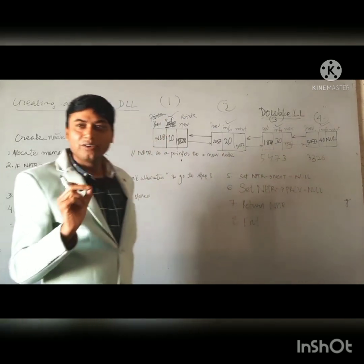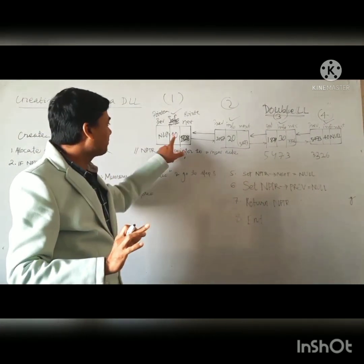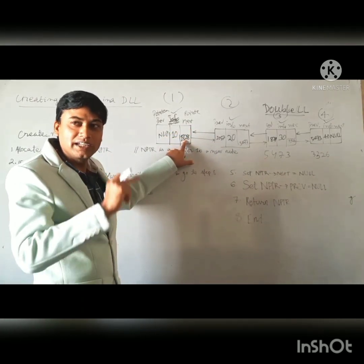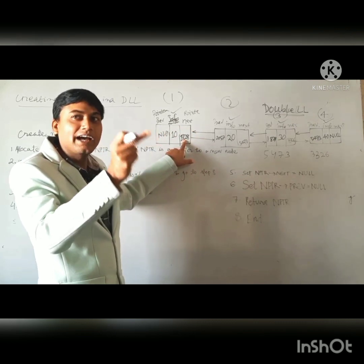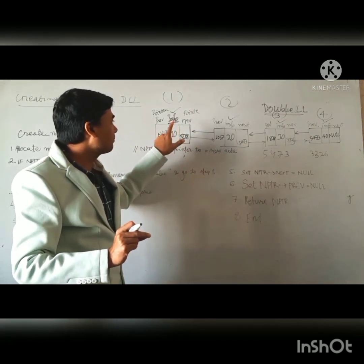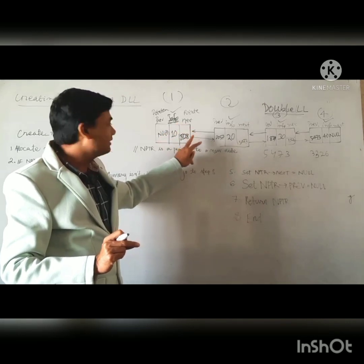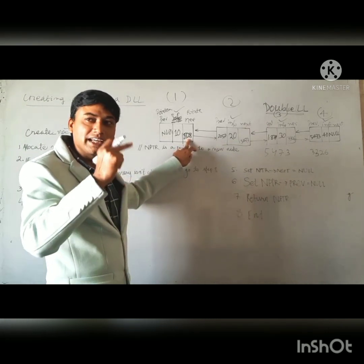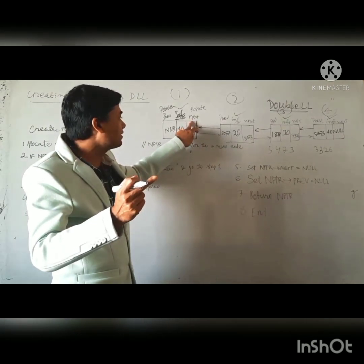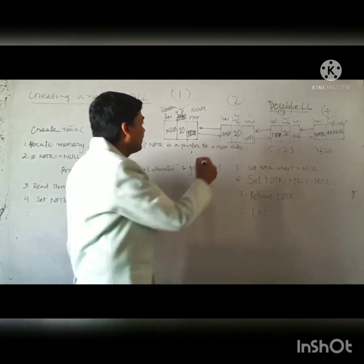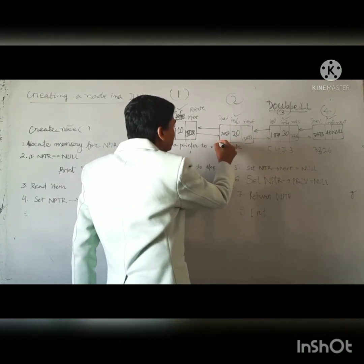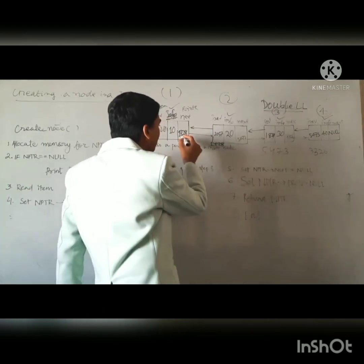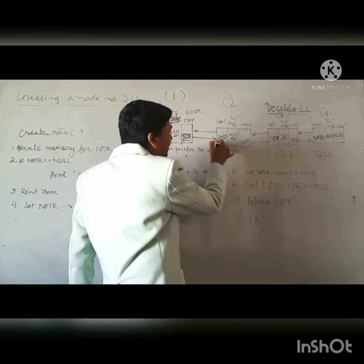As I was telling, every node has three parts. One is the information part in the middle. One is next, which is a pointer that points to the next node in the list, like a single linked list. Here you see there is a next pointer pointing to the next node. Suppose the address of the second node is 1828, so here also 1828, which is pointing to the next node in the list.